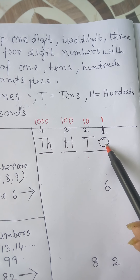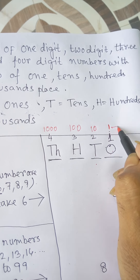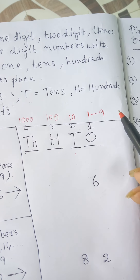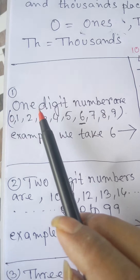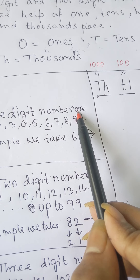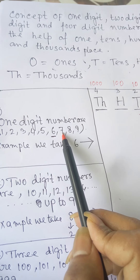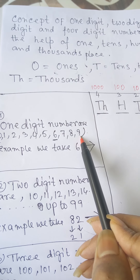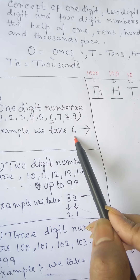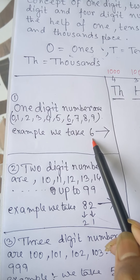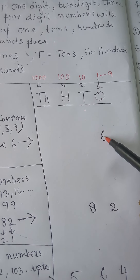O stands for ones, and ones means one digit — from 1 to 9. These are single-digit numbers. One-digit numbers are 0, 1, 2, 3, 4, 5, 6, 7, 8, 9 — up to 9. For example, we take 6 as a one-digit number, and we place 6 in the ones column.